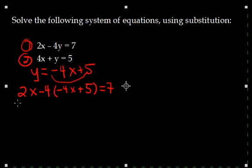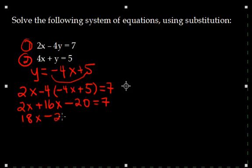Alright, so now we notice we have an equation and there are just x's. So what I'm going to do is I'm going to simplify it and solve for the x that is left there. Okay, collect your like terms. I've got 18x minus 20 equals 7.